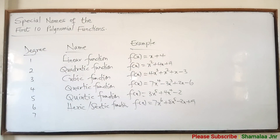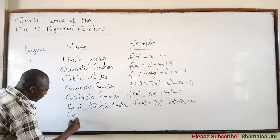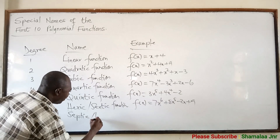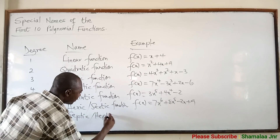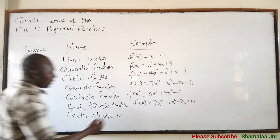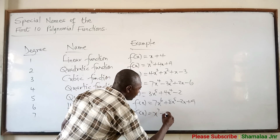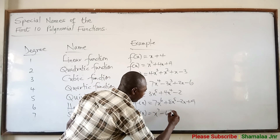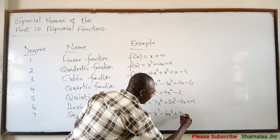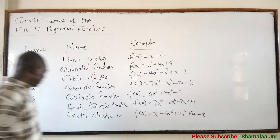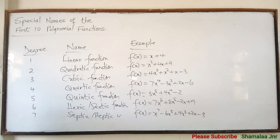Now when the degree is 7, then you say that it is a septic function — or sometimes you can say it is a heptic function. For example, L(x) = x⁷ − 6x⁵ + 4x³ + 2x − 3. This one is a septic or heptic function.